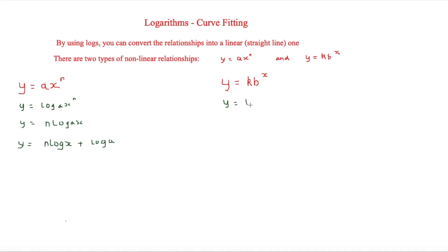For y = kb^x, we take logs: log y = log(kb^x). Using the power law of logarithms, we bring x to the front: log y = x·log(kb). Expanding gives log y = x·log b + log k, which again matches y = mx + c and is what we will look at next.